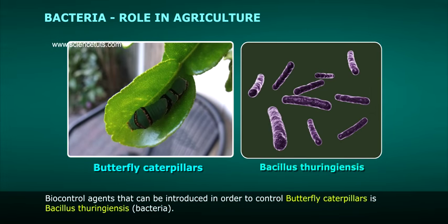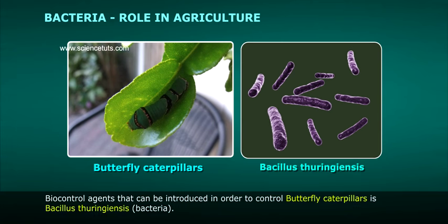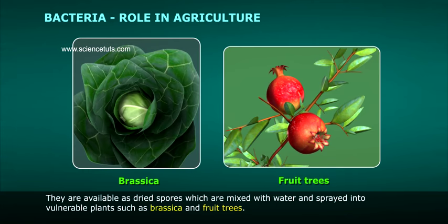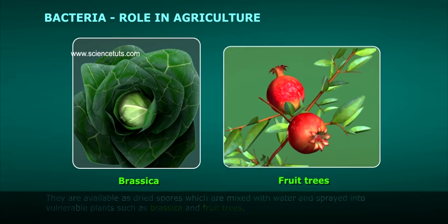The biocontrol agent that can be introduced in order to control butterfly caterpillars is Bacillus thuringiensis bacteria. They are available as dried spores which are mixed with water and sprayed onto vulnerable plants such as brassica and fruit trees.